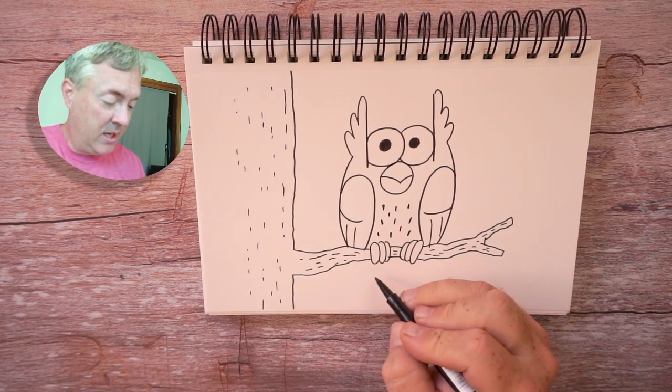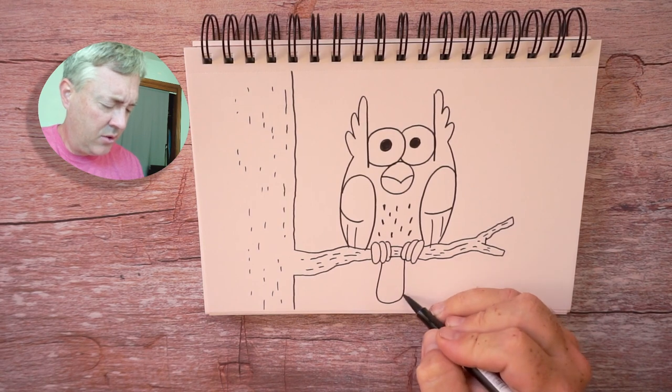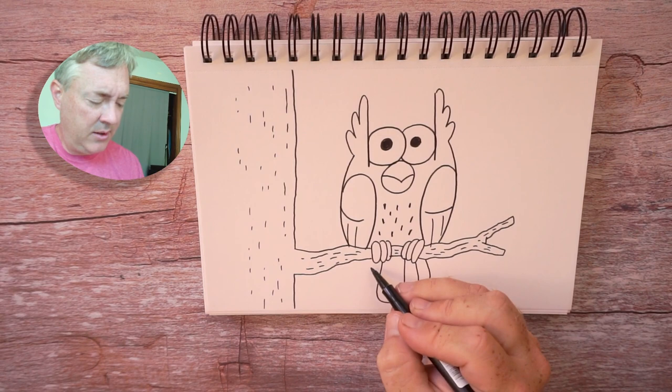Now, let's add tail feathers. I'm going to start with the middle one, and I'm going to draw two more to each side. And on this side as well.